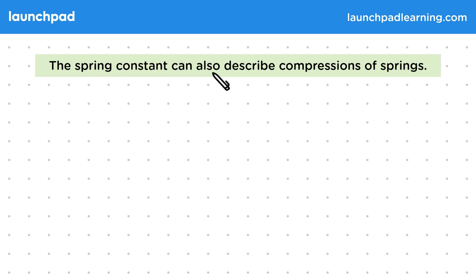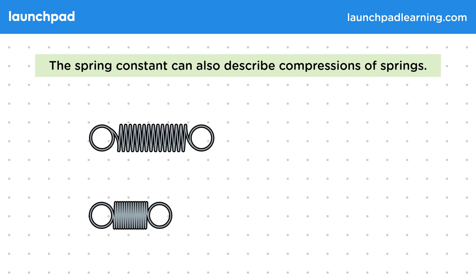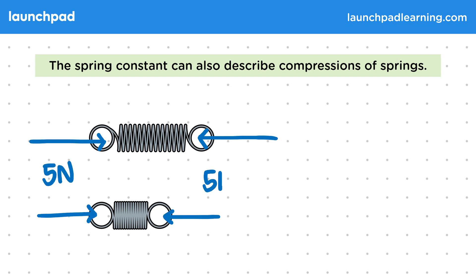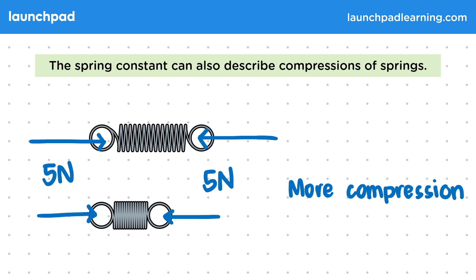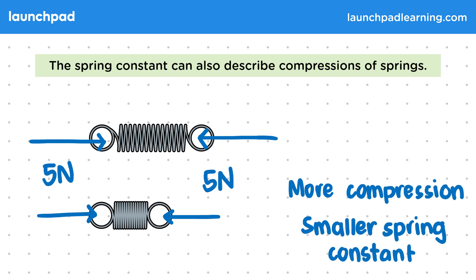The spring constant can also describe compressions of springs. In this example, we're compressing two different springs with the same force. The top spring doesn't compress as much, so we know that it has the larger spring constant, whereas the bottom spring shows more compression, and therefore it has a smaller spring constant. You should be able to compare the behaviours of springs given their spring constants in your exams.